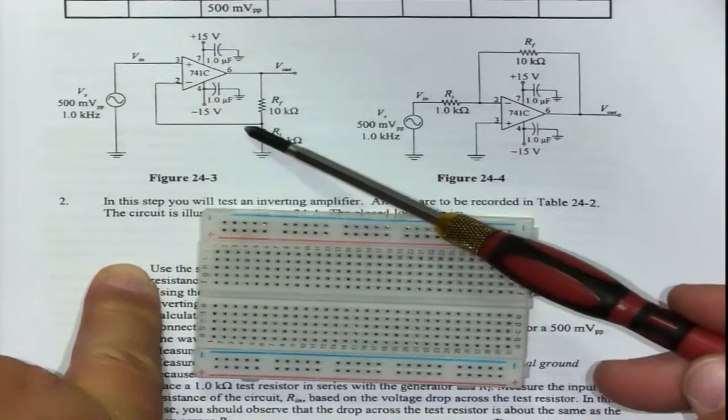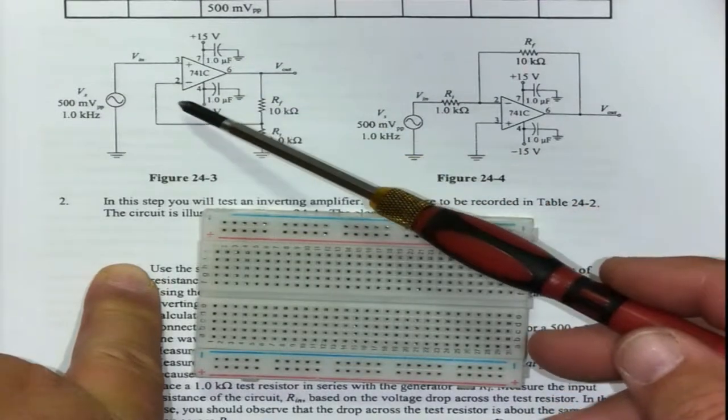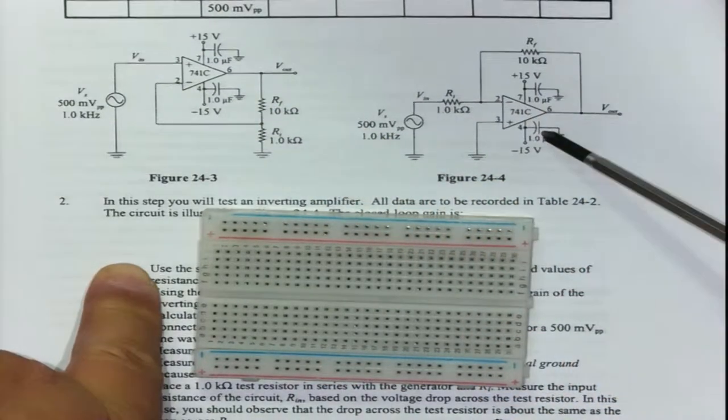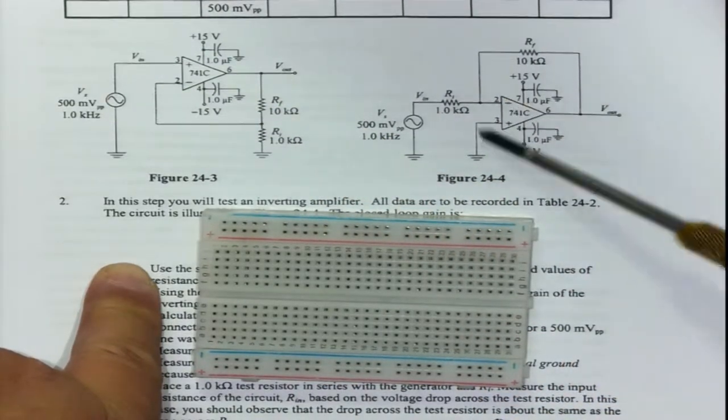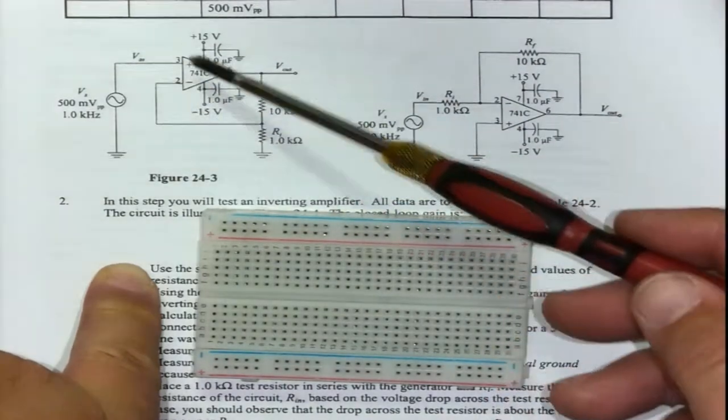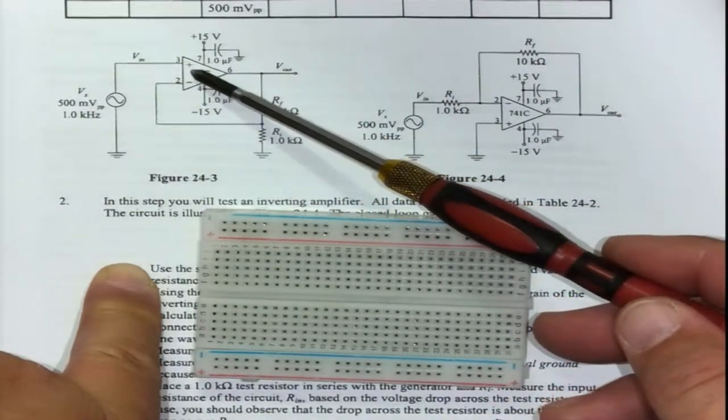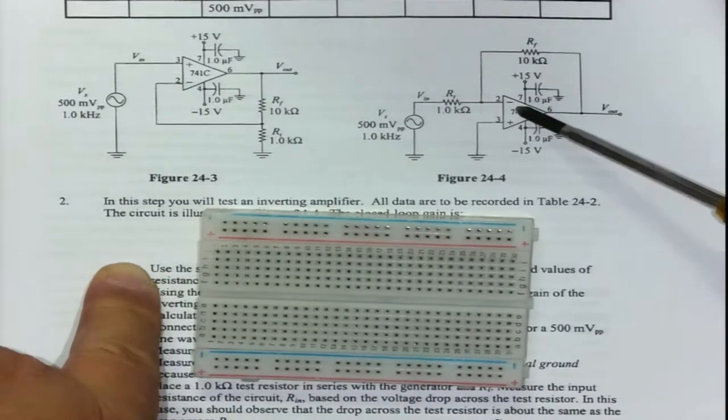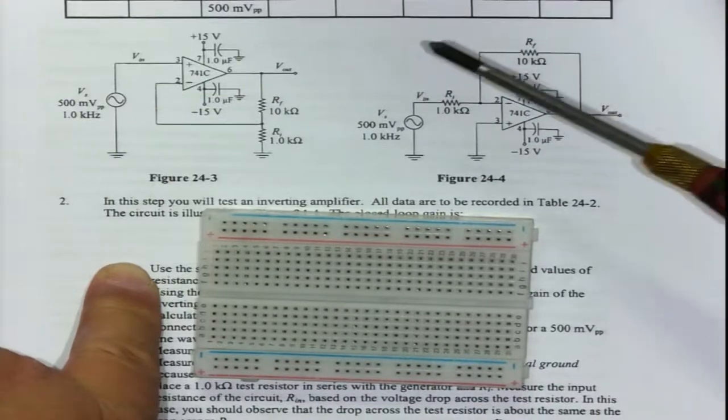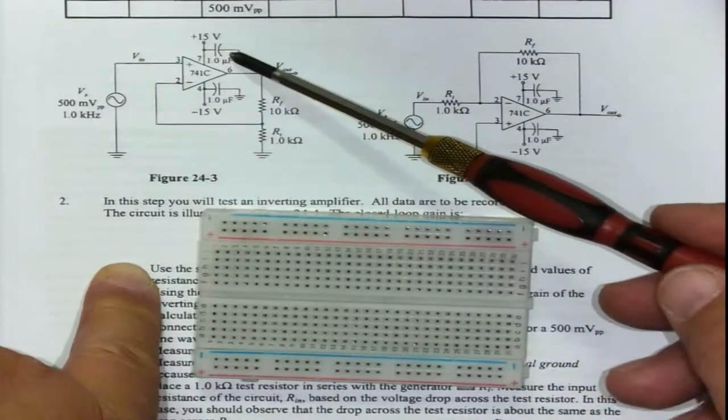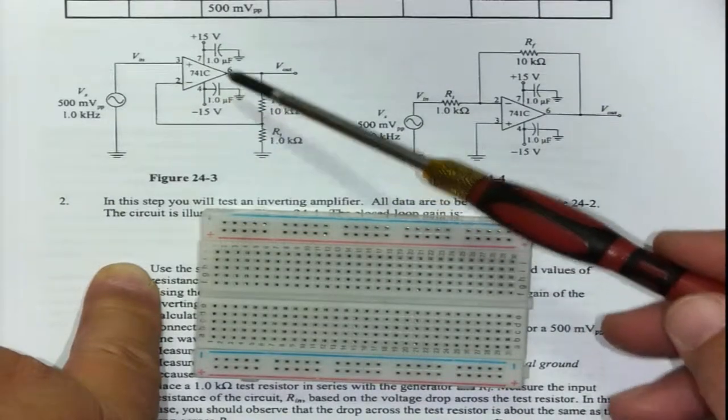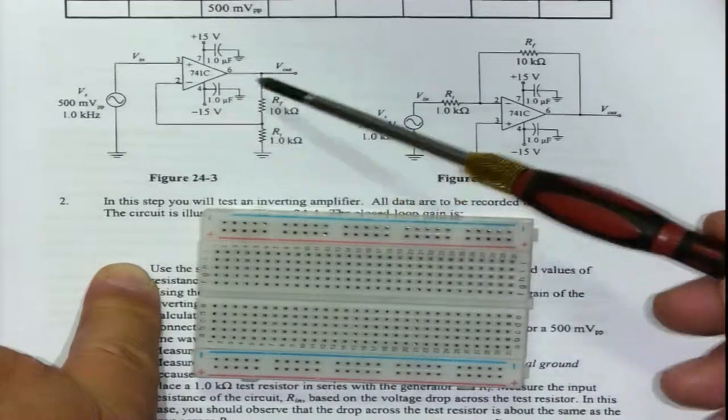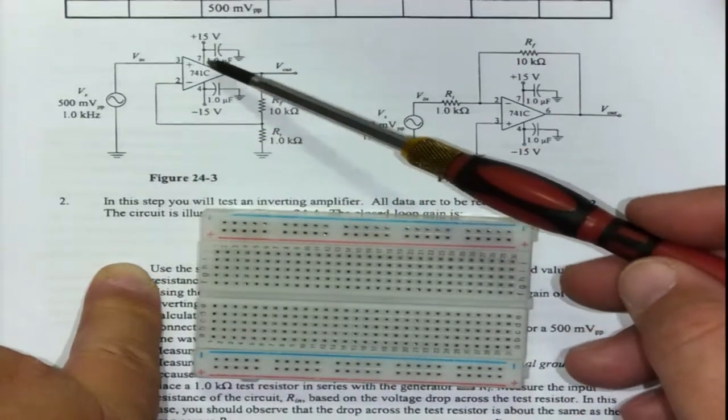On the circuit on the left, Figure 24-3, it is a non-inverting operational amplifier. Non-inverting means we're using the positive input and getting the results. Inverting means we're using pin two, which is the negative input, getting the results.